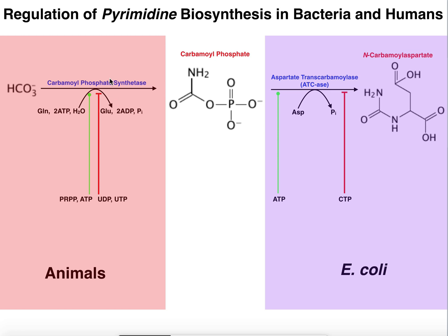Let's talk about animals first. The allosteric enzyme in this pathway for humans is carbamoyl phosphate synthetase — this is the enzyme that humans heavily regulate. The allosteric regulation is both positive and negative.